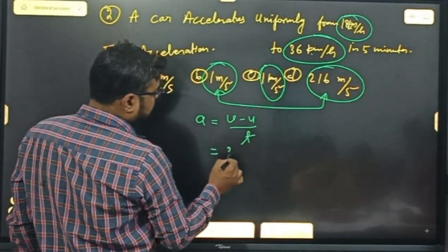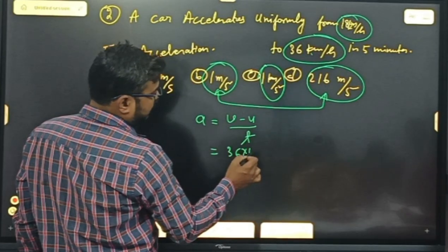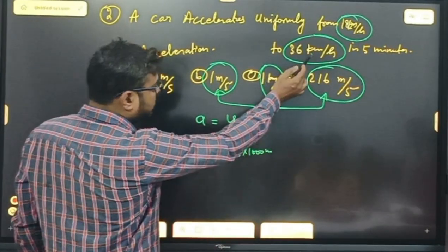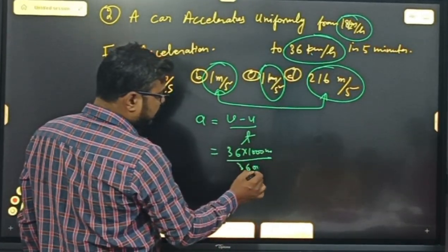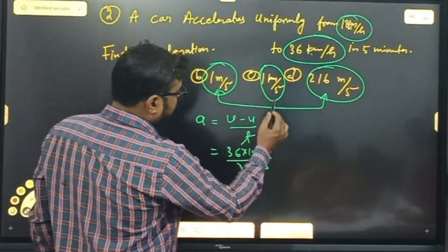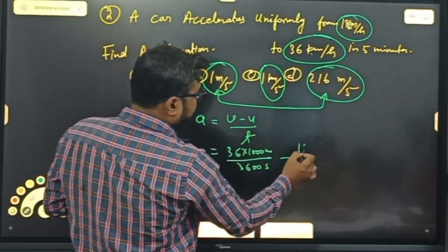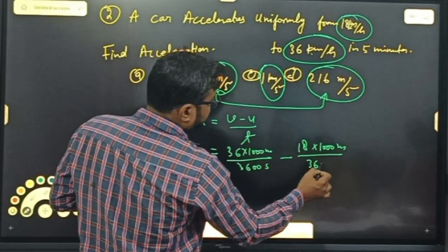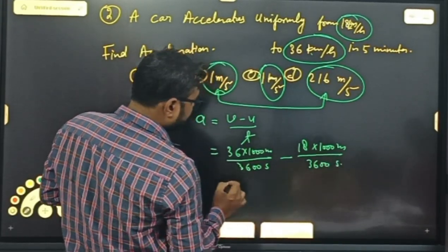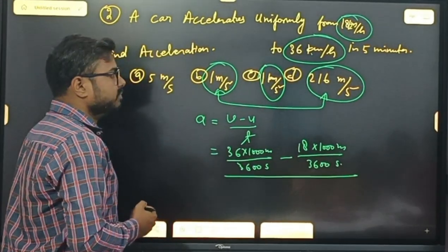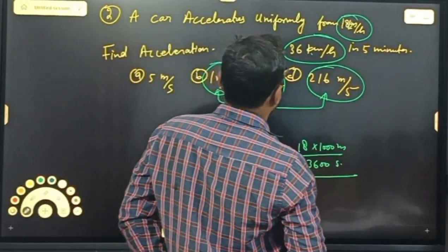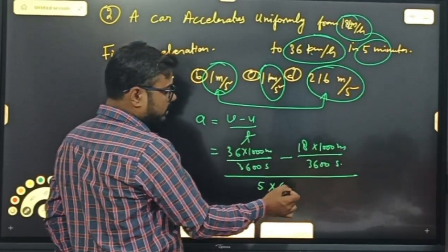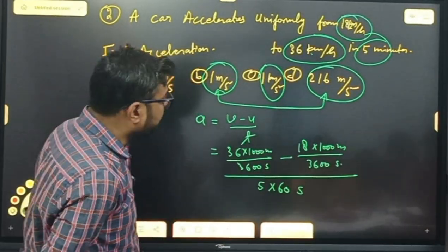V कितना है? 36 kilometer — तो 1,000 meter हो जाता है। 1 kilometer = 1,000 meter। इसको second में change करोगे? एक घंटे में 3,600 seconds होते हैं। Minus U, जो 18 है — kilometer यानी 1,000 upon 3,600 seconds — upon T। T कितना है? 5 minute — minute को second में change करोगे तो into 60 होता है।